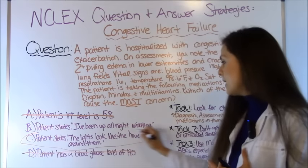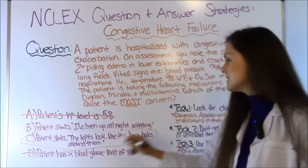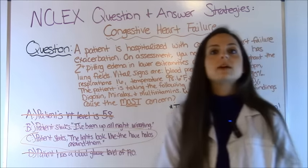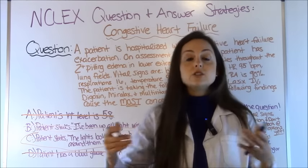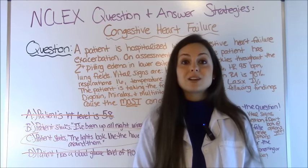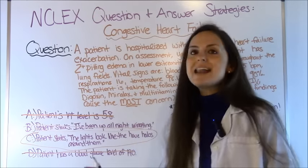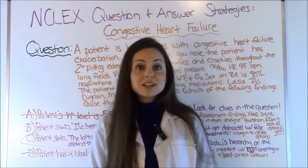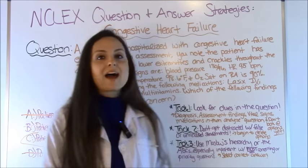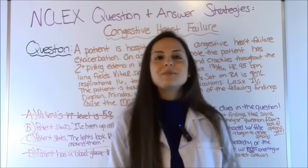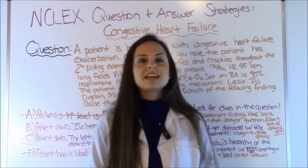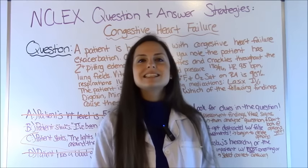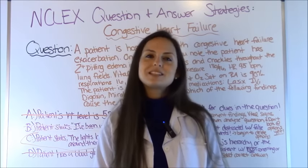The correct answer is C. The patient seeing halos around lights is likely a sign of Digoxin toxicity. We need to report this to the doctor so we can check a Digoxin level and confirm toxicity. That is how you answer this type of NCLEX question using these three tricks. Check out my other videos on how to answer other types of NCLEX questions, and thank you so much for watching — please consider subscribing to this YouTube channel.